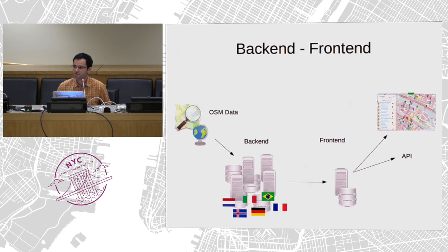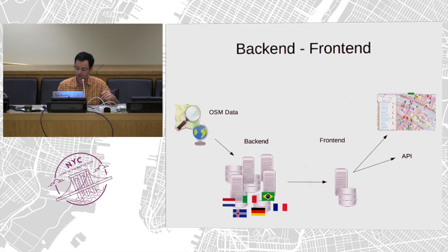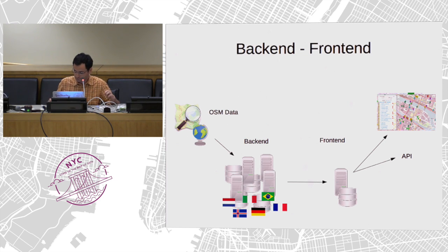So we've seen the front-end part — the user-facing map and markers for correction. In the back-end part, there are many servers and a lot of data manipulation. We start with OpenStreetMap data and open data sets. We use many servers, and the server sends an issue report to the front end for display to the user.